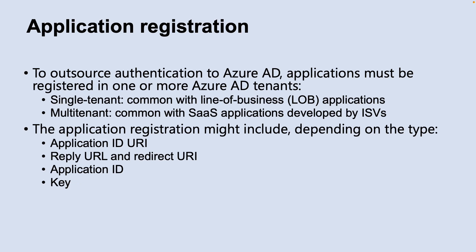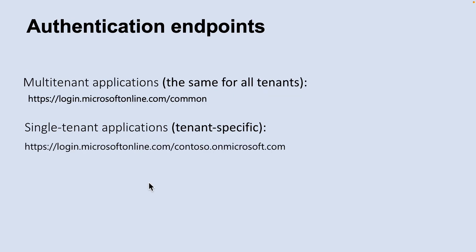This enables core features such as authentication of the user or application during sign-in and authorization during resource access. Note that registering an application is a necessary step, which involves telling Azure AD about the application including the URL where it's located, the URL to send replies after authentication, and the Uniform Resource Identifier to identify the application.